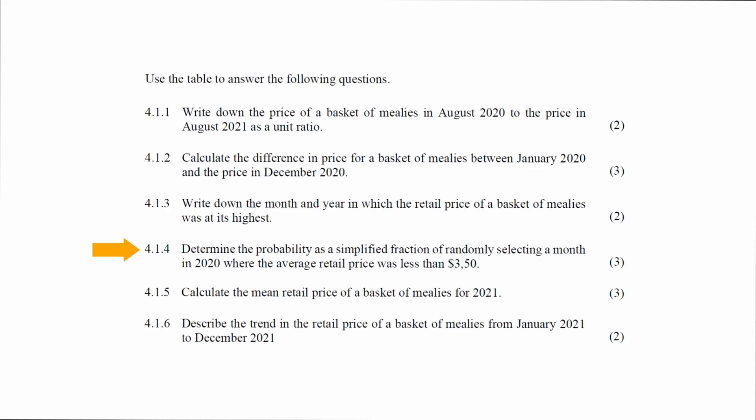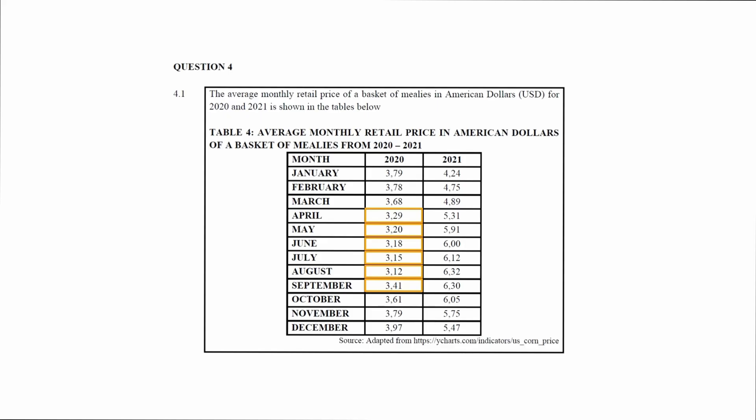In question 4.1.4, you are instructed to determine the probability as a simplified fraction of randomly selecting a month in 2020 where the average retail price was less than $3.50. From the table, these months in 2020 where the retail price of mealies was less than $3.50 are identified.